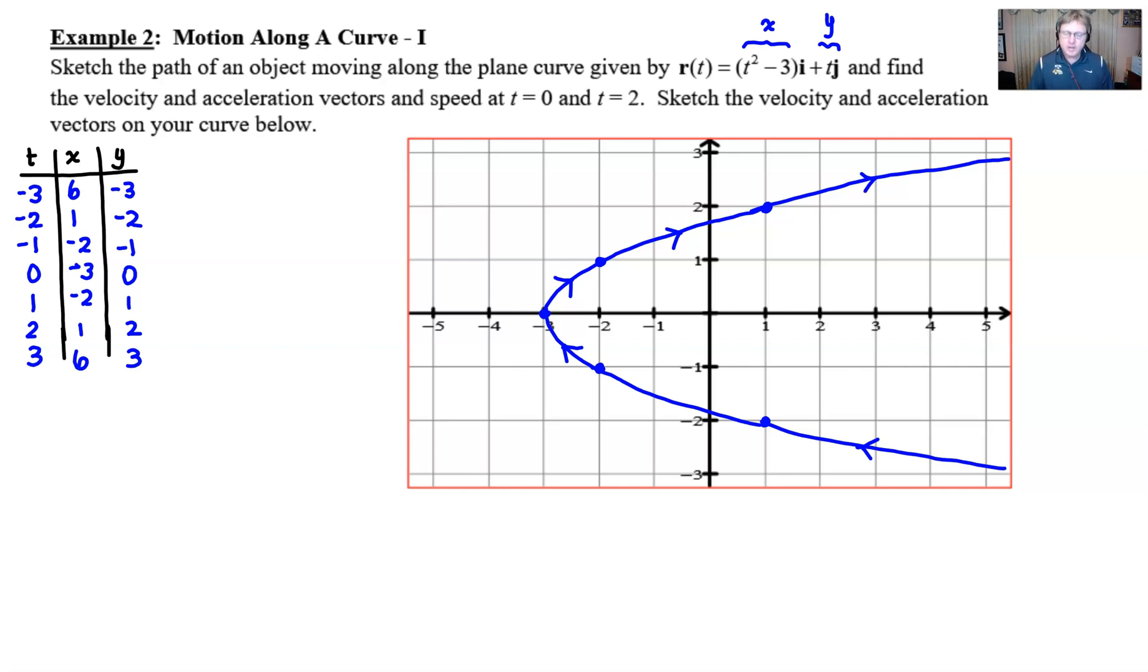We can now move on to our velocity vectors and acceleration vectors. So for the velocity vector v, that is just the derivative of the position. Our position vector t² - 3 is going to produce a 2t with our i unit vector. And then the derivative of t, of course, is 1, which would multiply by our j unit vector. At this point, we can go ahead and evaluate at time zero, and we'll evaluate at time two to get our two specific velocity vectors. When you replace t with zero, this entire i component goes away and you're left with just j. And when we replace t with two, we have 4i plus 1j.